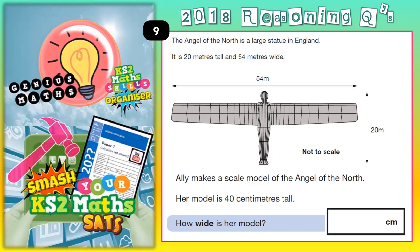Welcome Satsbusters to question 9. This is all about a real statue in the north of England called the Angel of the North. It is 20 metres tall and 54 metres wide — those are real measurements — and obviously this is just a scale drawing.